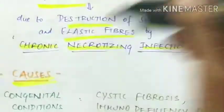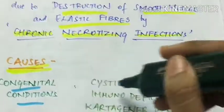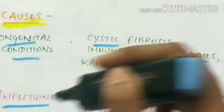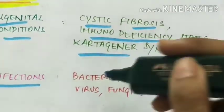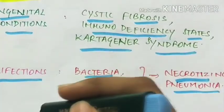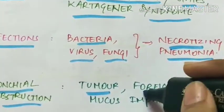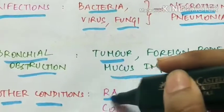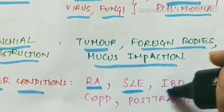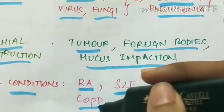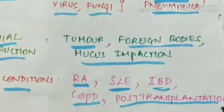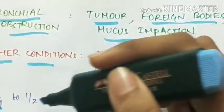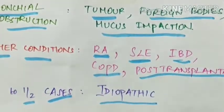Causes of bronchiectasis include congenital conditions like cystic fibrosis, immunodeficiency states and Kartagener's syndrome. Infectious causes include necrotizing pneumonia caused by bacteria, viruses and fungi, or bronchial obstruction due to tumour, foreign bodies or mucus impaction. Other causes include rheumatoid arthritis, systemic lupus erythematosus, inflammatory bowel disease, COPD and post-transplantation graft-versus-host disease. In one-fourth to half of cases the cause is idiopathic.